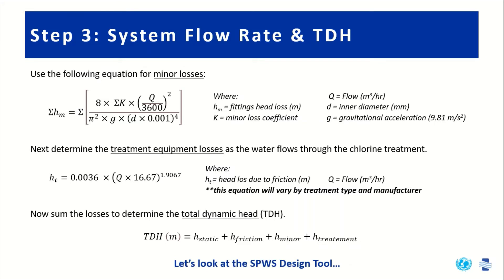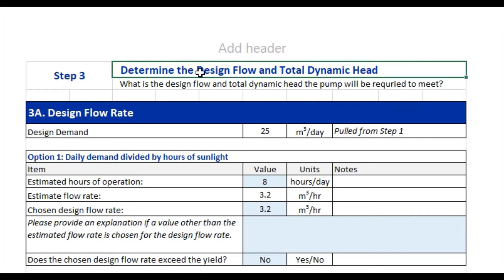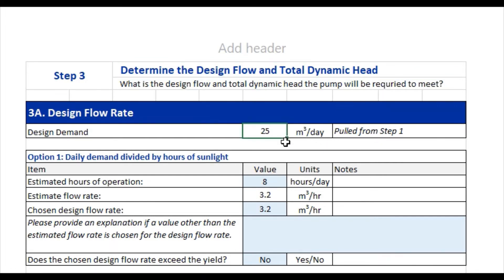Now we've arrived at step three in our solar-powered water system design tool, where we will determine the design flow and total dynamic head. The design demand pulled from step one was about 25 cubic meters per day. Next, we enter the estimated hours of operation for the specific project location, based on estimated hours of peak sunlight. In this case it was eight hours per day, though this varies by location. The design tool then estimates the flow rate by dividing design demand by estimated hours of operation, giving us 3.2 cubic meters per hour.